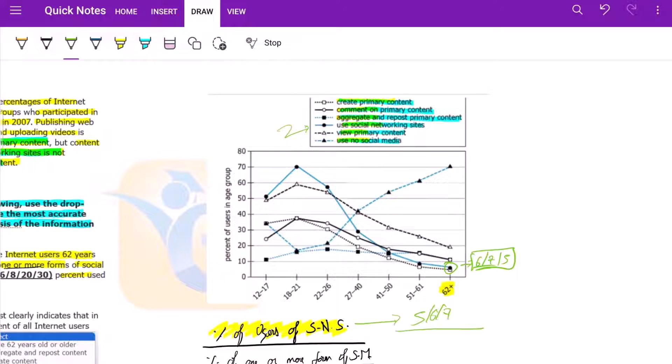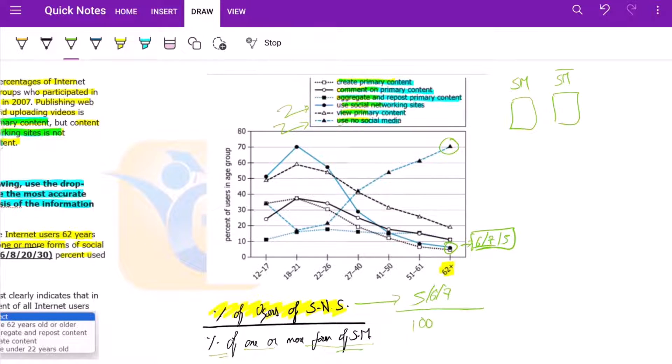See there's an interesting thing here: use no social media. This is explicit - two buckets. Either people would use social media, one form or the other, or will not use, right? So use no social media is 70 percent, so use some sort of social media would be 100 minus 70.